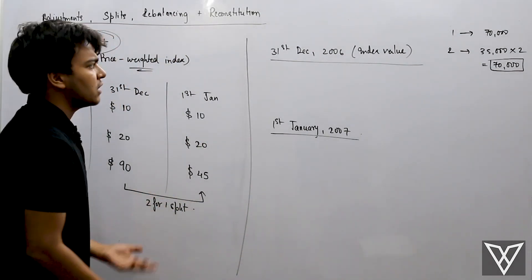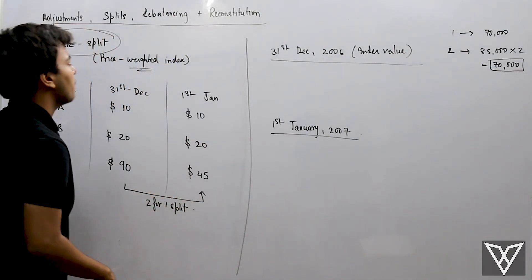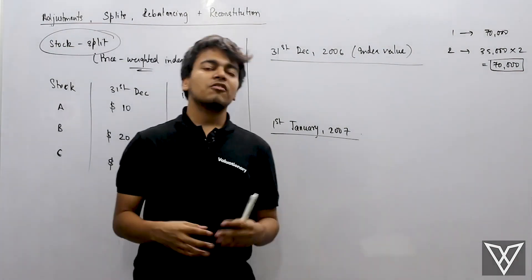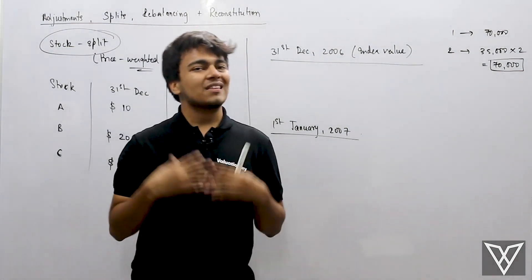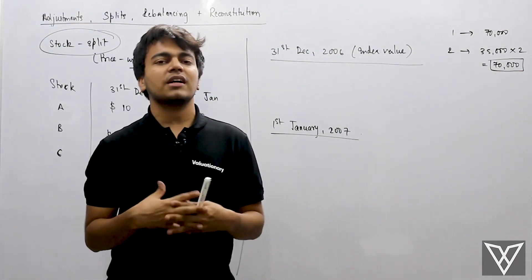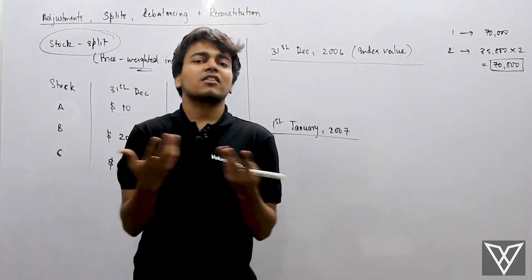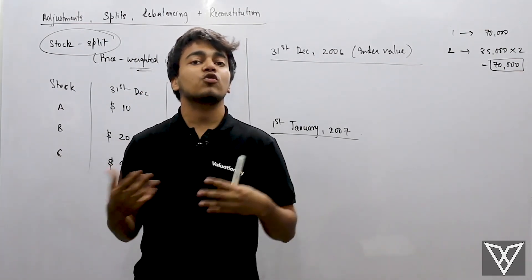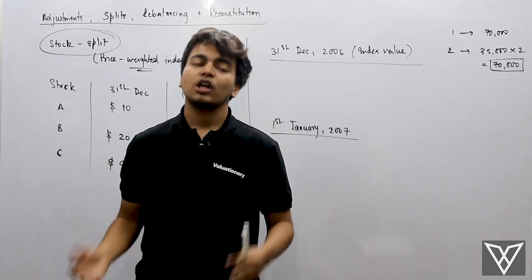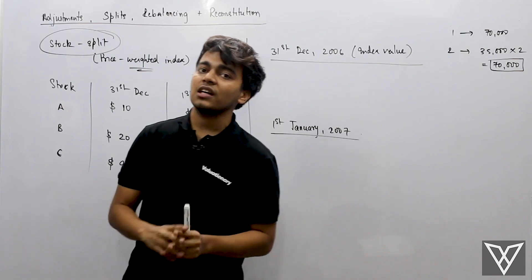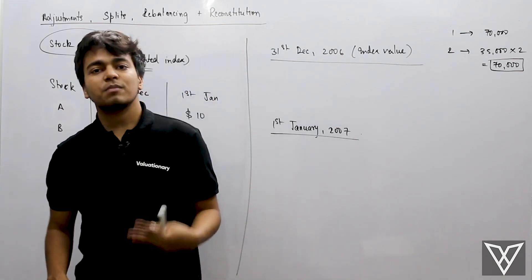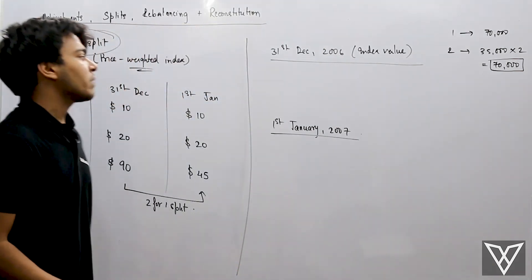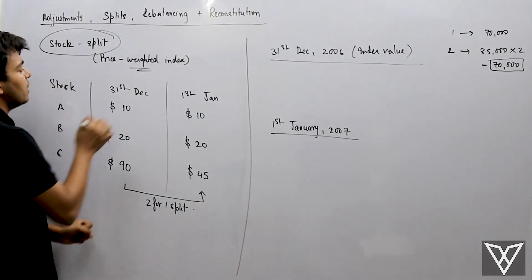Recently Tesla also did this, if you are aware. So because of this stock split, how does the price-weighted index need to be adjusted? Because the index value should not show any difference — since only a stock split happened and the actual price did not go up or down — so the index value should not change. Let us understand how that adjustment is done.